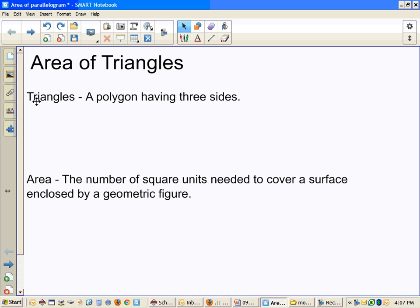Area of Triangles. Easy definition of a triangle, a polygon that has three sides.